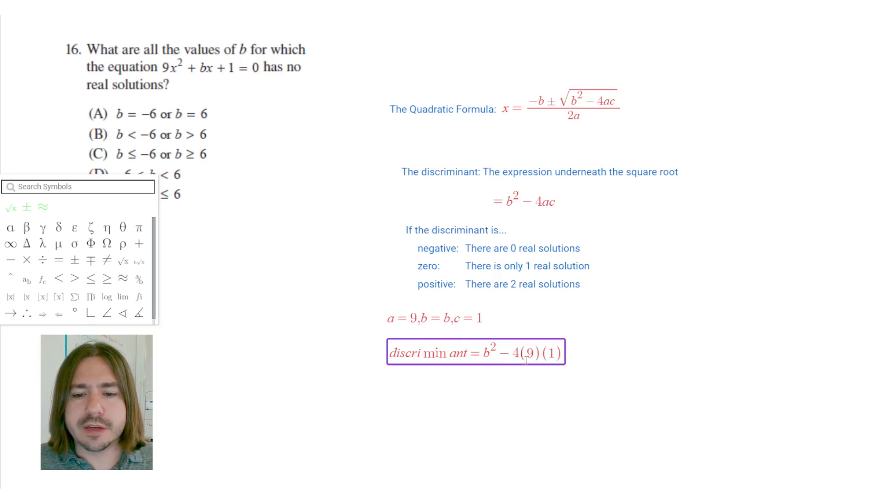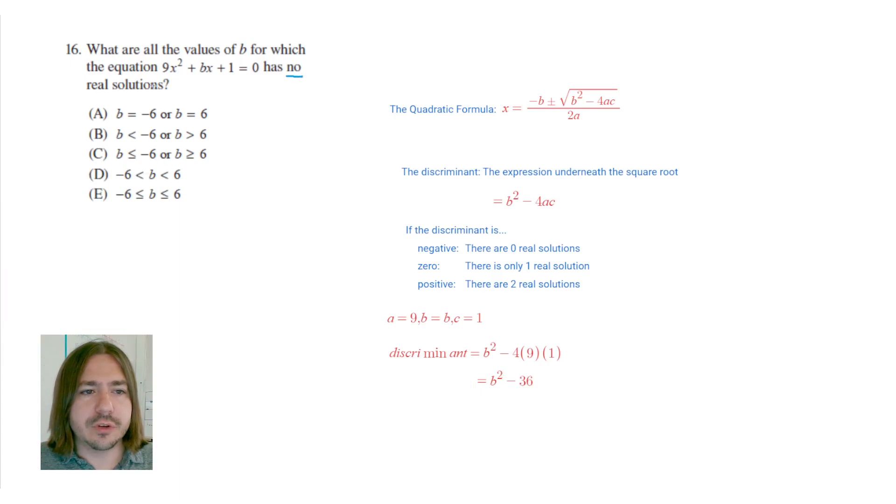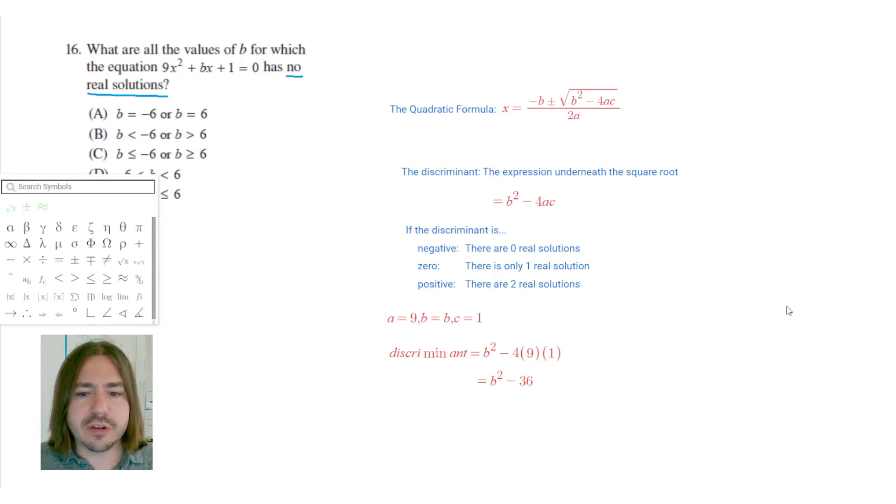We still don't know what b squared is. Now, 4 times 9 is going to be 36. So we get this b squared, whatever that is, minus 36. In order for there to be no real solutions like the question is asking, we need to make sure that this number, this discriminant, is negative. So we're going to solve this inequality.